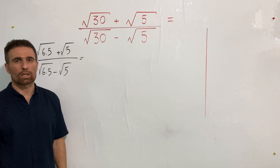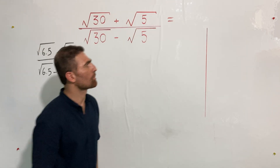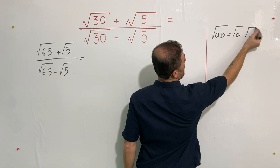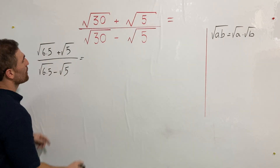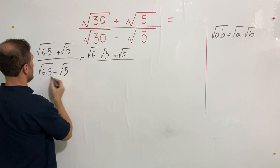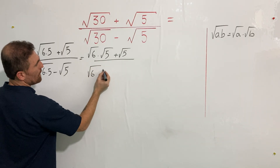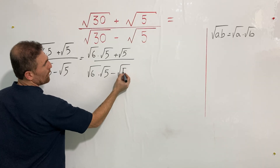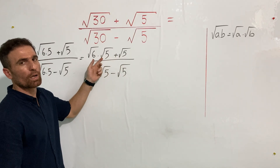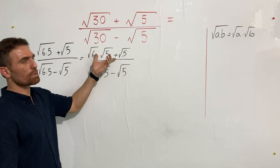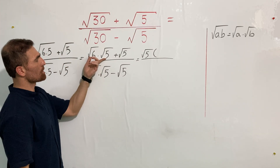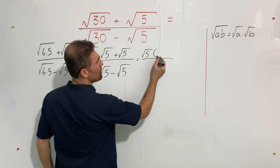But what is the next step? To continue the solution, I'm going to use the math rule that says square root of a times b is the same as square root of a times square root of b. So square root of 6 times 5 becomes square root of 6 times square root of 5. Now, what is the common factor between this term and this term? The common factor is square root of 5, so let's factor square root of 5 out. It's going to be square root of 5 times square root of 6.